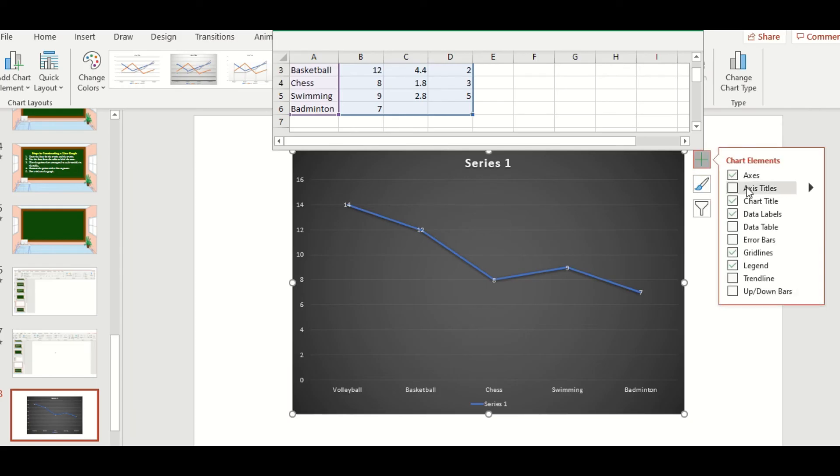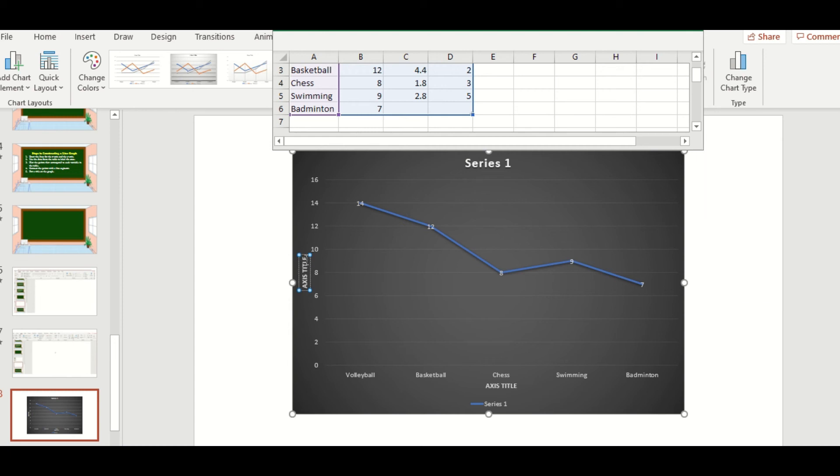Then we can add axis title also. So for our y-axis, this is the frequency. And for the x-axis, this is the sport, based on our table.